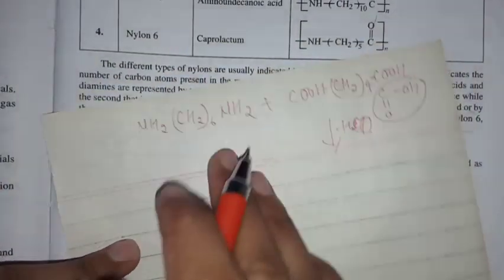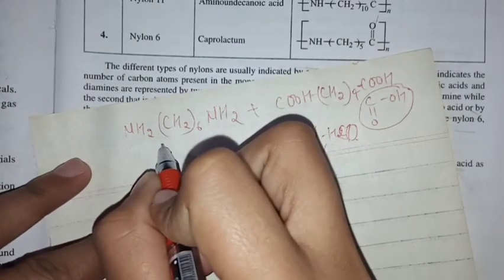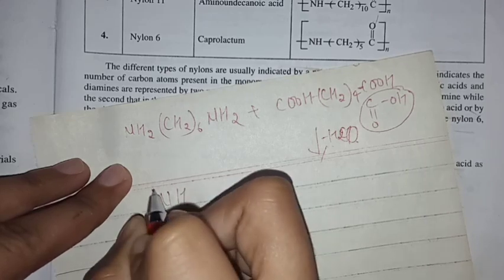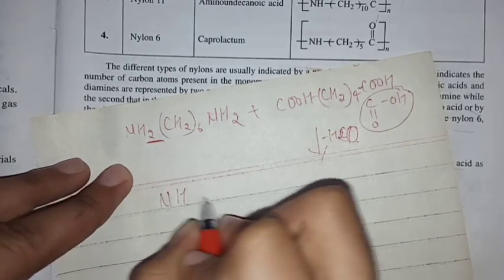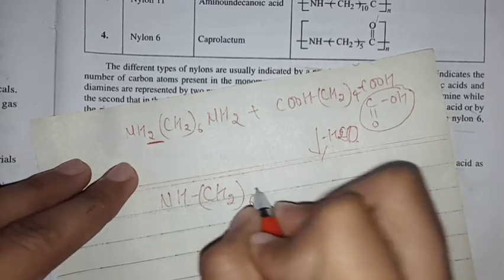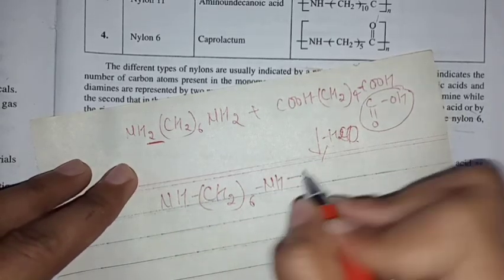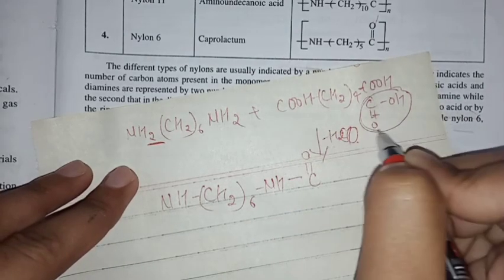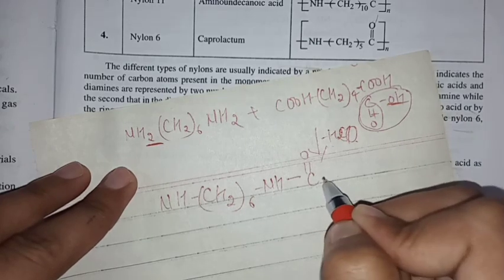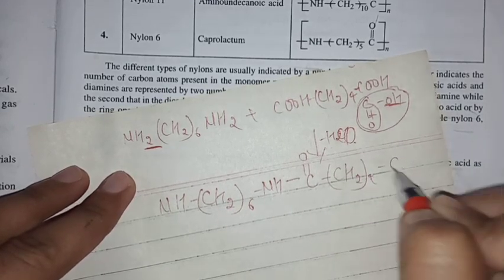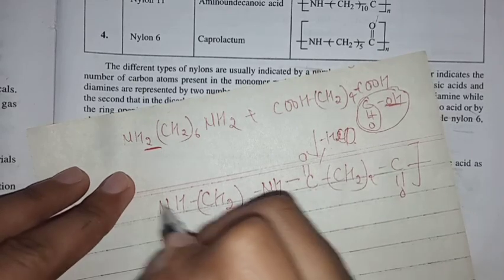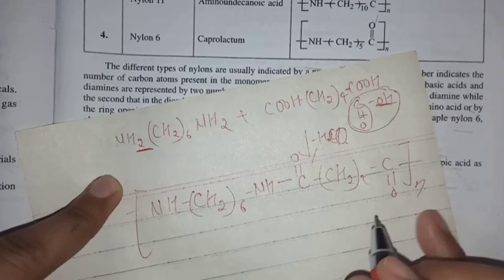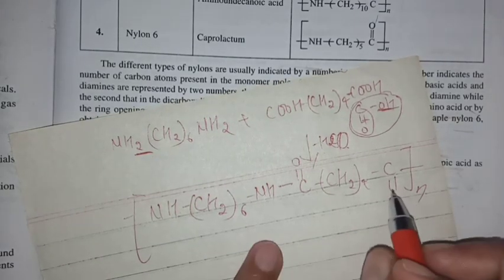This is hexamethylene diamine and this is adipic acid. And again is NH-CH2-6-NH, C double bond O, C double bond O. This part with this part, OH will come with CH2-4, C double bond O. That is you can see this form of polymerization.